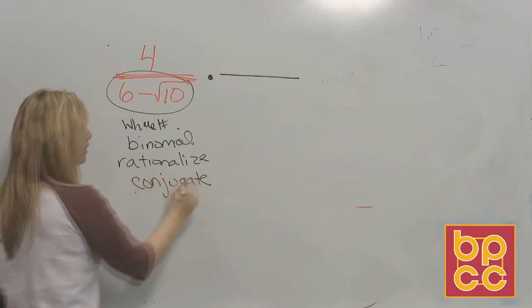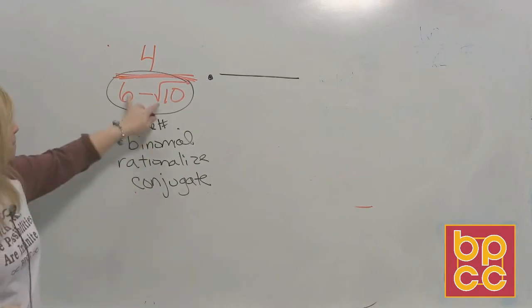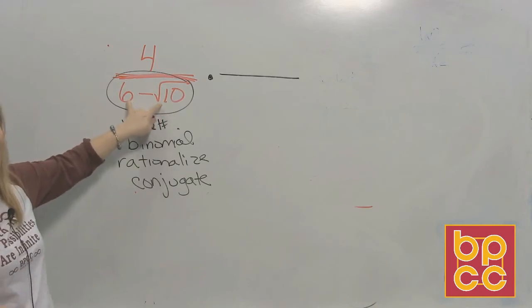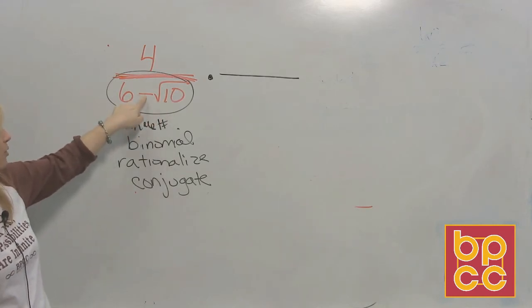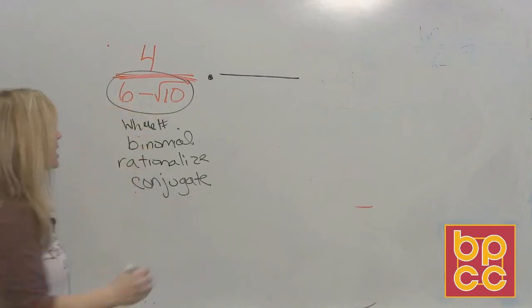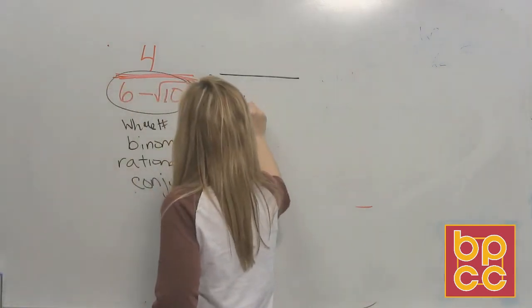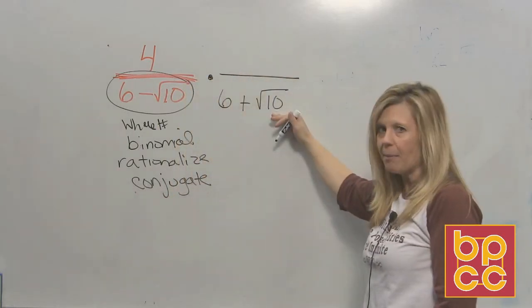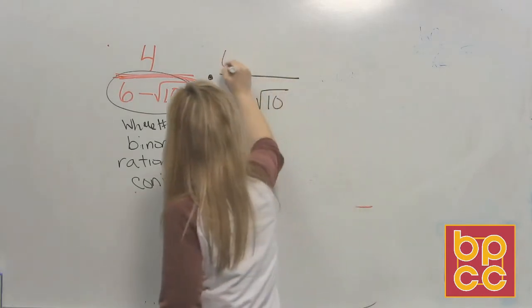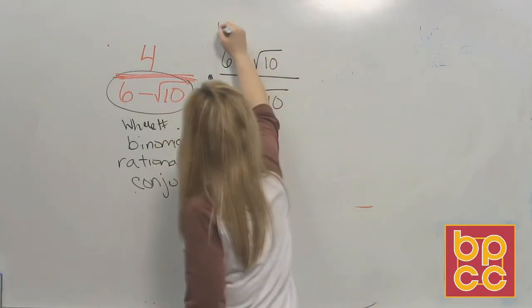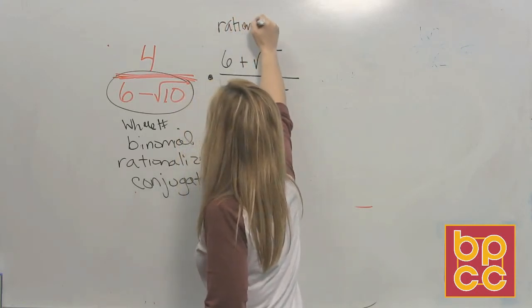So there's all our vocabulary coming back to us. Bi means two. And when you have a binomial, every binomial has a conjugate. Conjugate means to change the middle symbol. So the conjugate is 6 minus a square root of 10 is 6 plus a square root of 10. If you're going to multiply the denominator by the conjugate, you have to multiply the numerator by the conjugate. The same thing. This step right here is the rationalizing step.